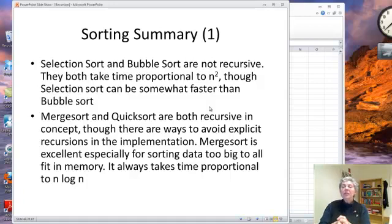Selection sort and bubble sort are not recursive. I didn't introduce bubble sort, but you can find it in the sorting sampler. And, contrary to what it says on here, bubble sort can be faster than selection sort, but they are both proportional to n squared.